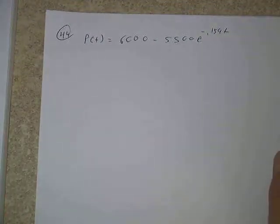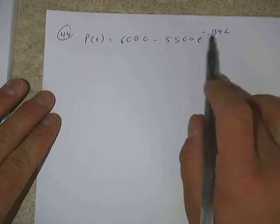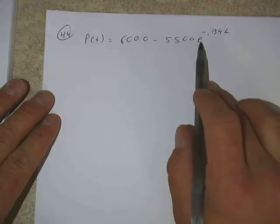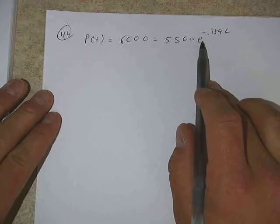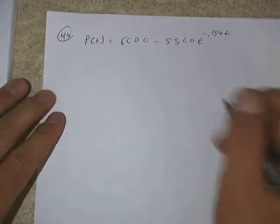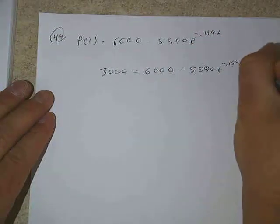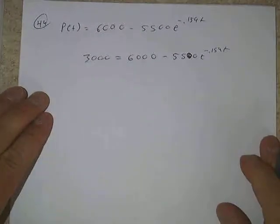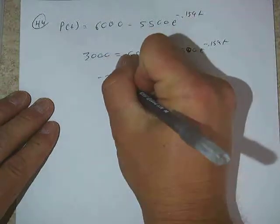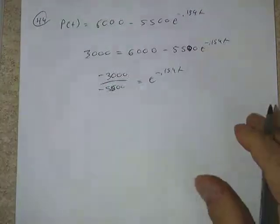Problem 44: we have a population function P(t) = 6000 − 5500e^(−0.159t), with time t greater than zero measured in years. As t increases, the exponential term goes to zero, so the limiting value is 6000. The question asks during which year the population reaches half of this limiting value — that is, 3000.